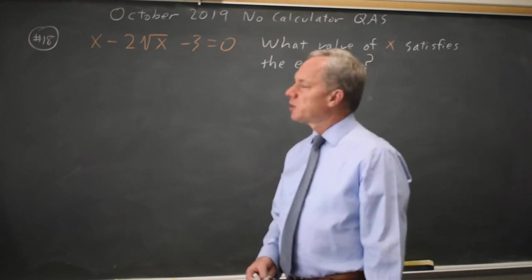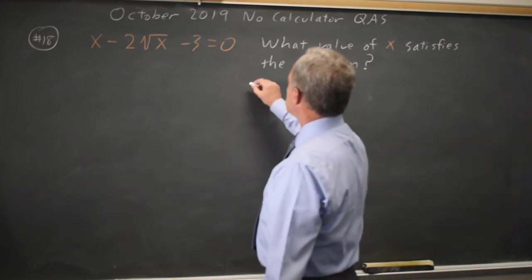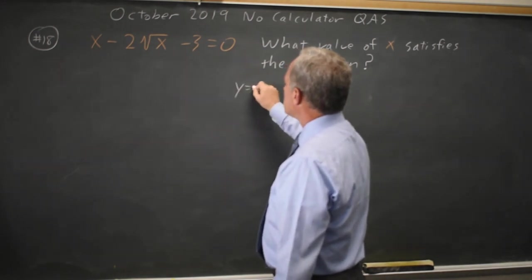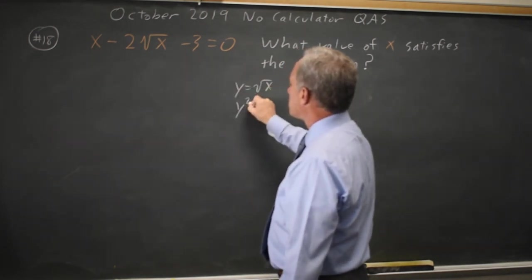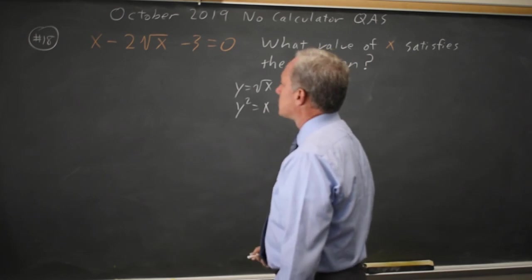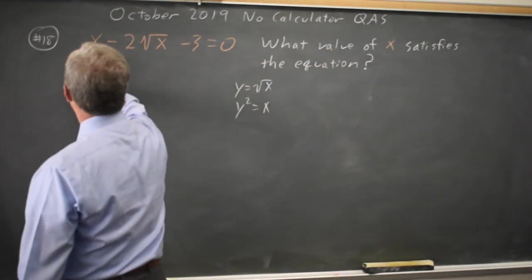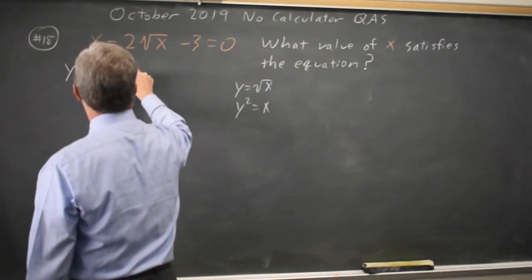One is to treat this like a quadratic, and to do that I'm going to write y equals root x, which means y squared equals x if I square both sides. So this is y squared minus 2y minus 3 equals 0, and I can factor that.